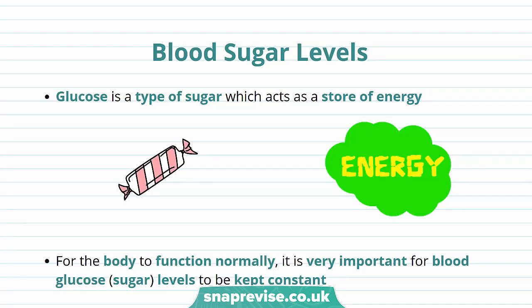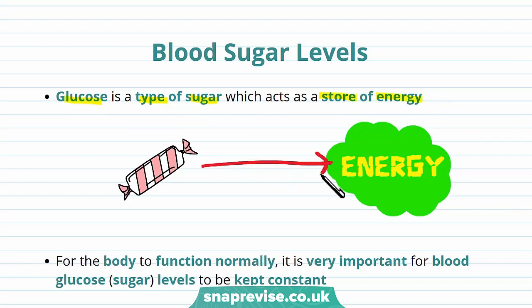Your blood contains sugar. One of these sugars is glucose. Glucose is a type of sugar which acts as a store of energy. Glucose is carried around in the blood so cells can use chemical reactions to release the energy found in glucose. This is through respiration.